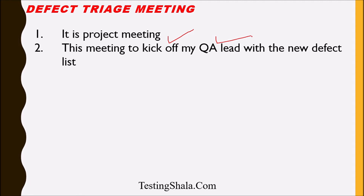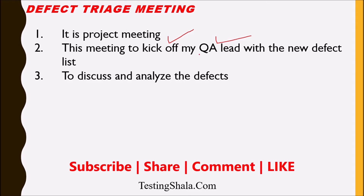The main purpose of this defect triage meeting is to discuss all the new defects logged in the system, as well as analyzing each defect for its severity, priority, and impact on the business.